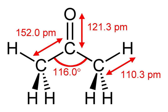Acetone is used as a chemical intermediate to synthesize methyl methacrylate. It begins with the initial conversion of acetone to acetone cyanohydrin: (CH3)2CO + HCN → (CH3)2C(OH)CN. In a subsequent step, the nitrile is hydrolyzed to the unsaturated amide, which is then esterified.